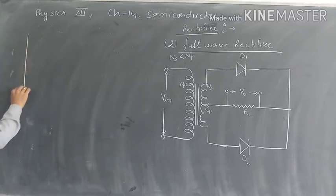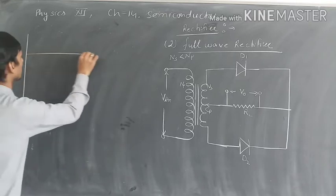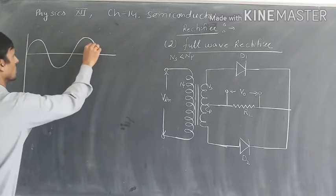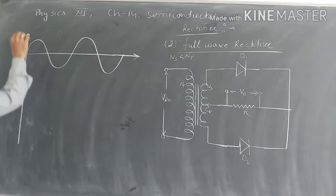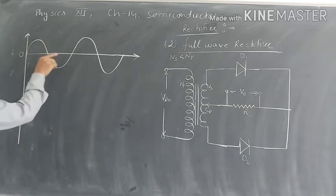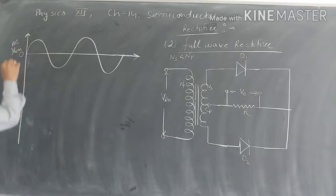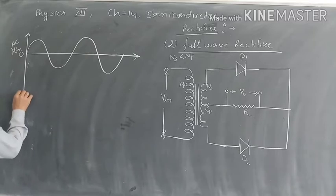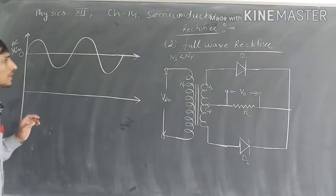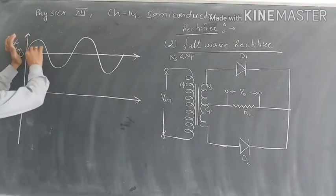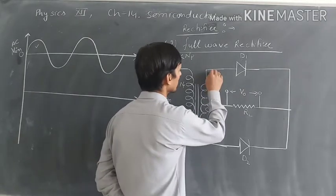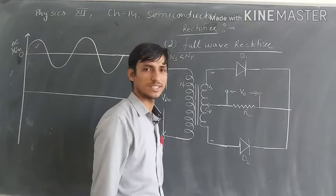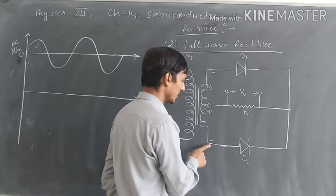Now we will look at the working of the full wave rectifier along with its waveform diagram. This is the complete AC input — AC voltage at input. Ab hum yahan pe iska output voltage dekhenge. From the transformer, we can say this terminal is considered as positive and this terminal is considered as negative.